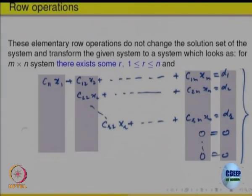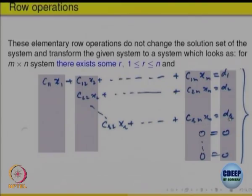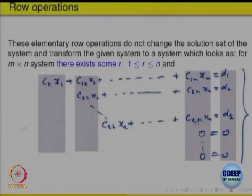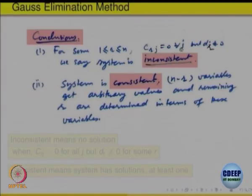Now, the last remaining equations are always true. But look at the rth equation: if all the coefficients c_rj are equal to 0 but d_r is not equal to 0, then we get 0 equal to a non-zero number. That means there is some inconsistency in the system, so the system will not have any solution. So the conclusion is: if for some equation all the left-hand side coefficients c_rj are zero but the right-hand side is not zero, the system is inconsistent.